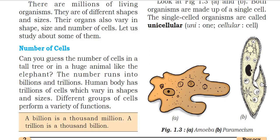Next, number of cells. Can you guess the number of cells in a tall tree or in a huge animal like the elephant? Elephant is a big, huge animal — how many cells does it have? The number runs into billions and trillions. In a tall tree or a big elephant, the number of cells is in the billions and trillions.